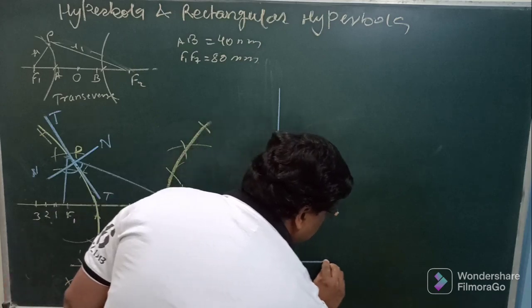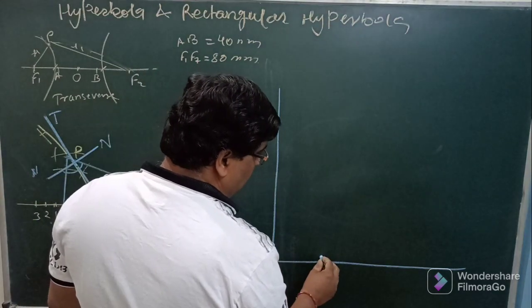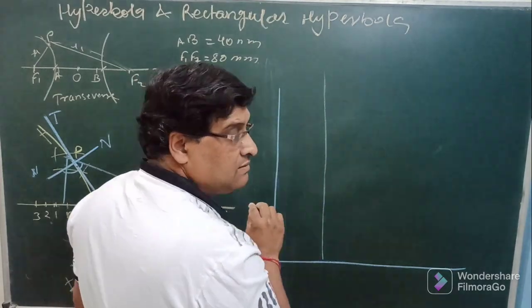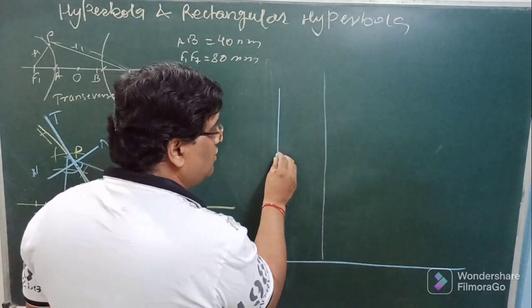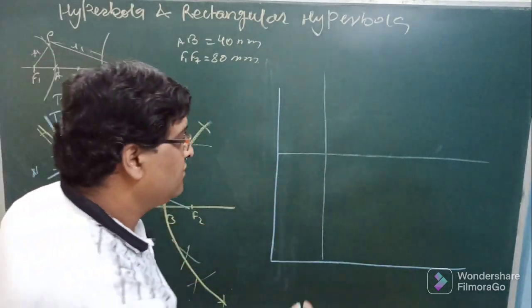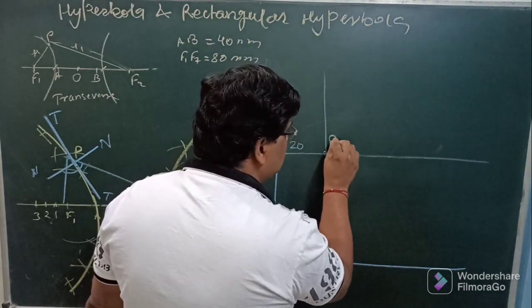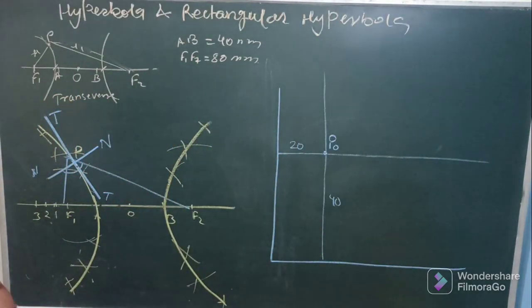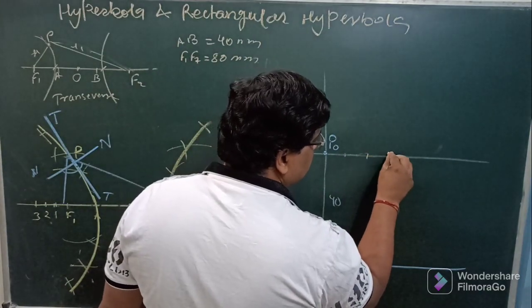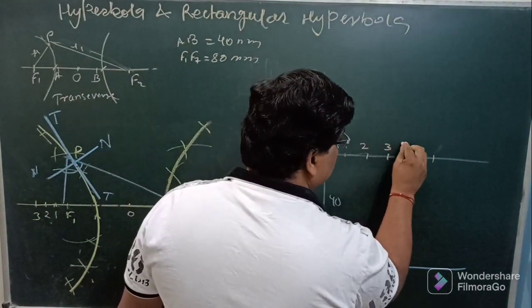Let us take one example: draw a curve generated by a moving point p such that it is following Boyle's law as far as distance from two mutually perpendicular line is concerned and initially it is at 20 mm and 40 mm from two mutually perpendicular lines. These are the two mutually perpendicular lines, initially the point is at 20 mm from the vertical line and 40 mm from the horizontal axis.